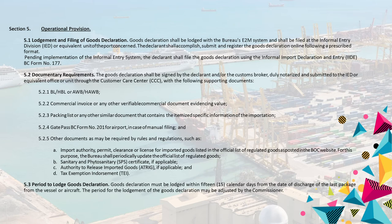5.2 Documentary Requirements. The goods declaration shall be signed by the declarant and/or the customs broker, duly notarized and submitted to the IED or equivalent office or unit through the Customer Care Center (CCC) with the following supporting documents: 5.2.1 BL/HBL or AWB/HAWB. 5.2.2 Commercial Invoice or Any Other Verifiable Commercial Document Evidencing Value. 5.2.3 Packing List or Any Other Similar Document that Contains the Itemized Specific Information of the Importation. 5.2.4 Gate Pass BC Form No. 201 for Airport, in case of manual filing. 5.2.5 Other Documents as may be required by rules and regulations, such as A. Import Authority, Permit, Clearance or License for Imported Goods listed in the Official List of Regulated Goods as posted in the BOC website. For this purpose, the Bureau shall periodically update the Official List of Regulated Goods.